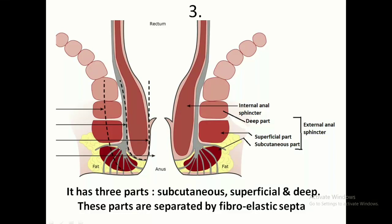It has three parts: the subcutaneous part, the superficial part, and the deep part. This is the location of the internal anal sphincter.